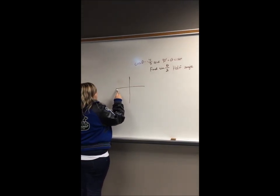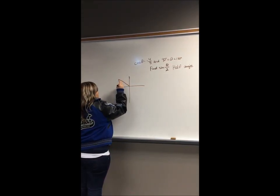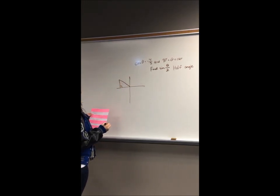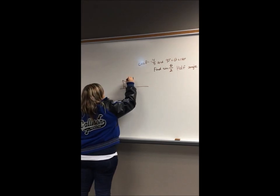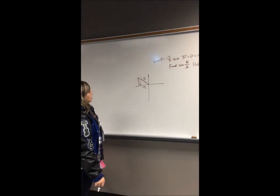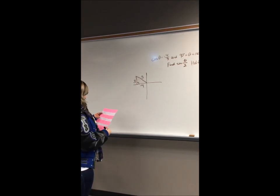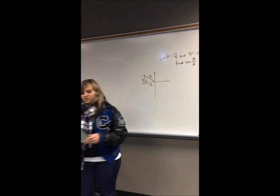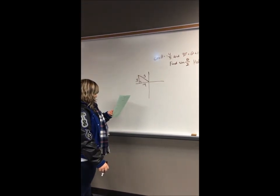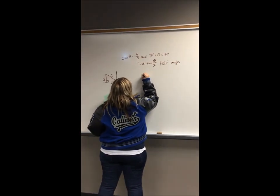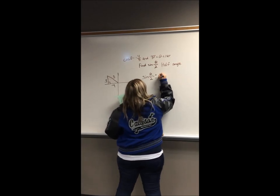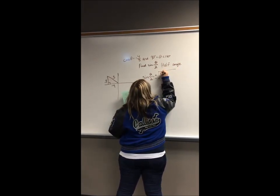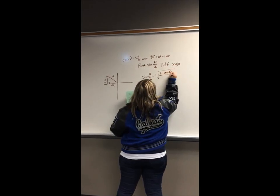Since it's between 90 and 180, it's going to be in the second quadrant. They give us the cosine, so the adjacent is going to be negative 4 and the hypotenuse is going to be 5. Knowing our Pythagorean triples, the opposite side is just going to be 3. So now we have all the sides of our triangle. We look on our unit circle for our identities, and sine of theta divided by 2 will be plus or minus the square root of 1 minus cosine theta over 2.